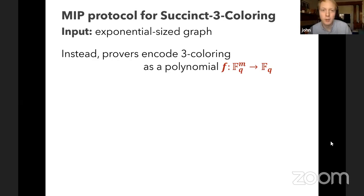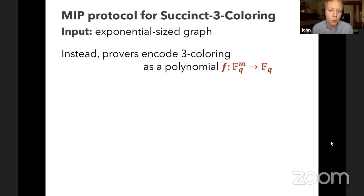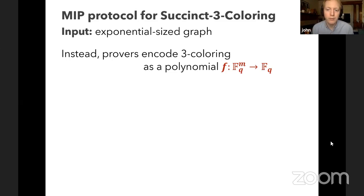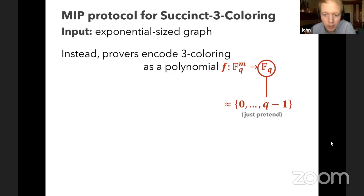It seems difficult to imagine how provers would convince the verifier that a graph is three-colorable without just giving the three coloring. So we need to figure out how to still have this protocol work, but in a clever way requiring less communication. Rather than having Alice send the entire three coloring, we'll have her encode it as a polynomial F mapping F_q^m into F_q, where F_q^m is a finite field over q elements. This is a multivariate polynomial over F_q with m input variables, where m is roughly polynomial in n.